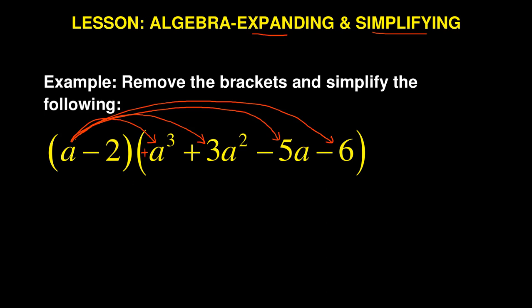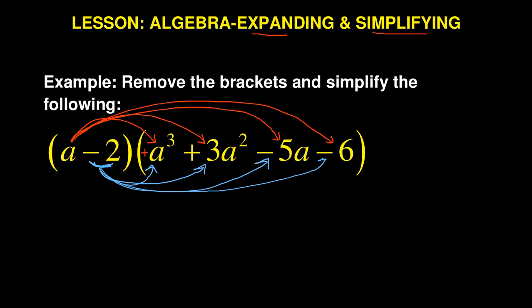The second part of distribution is when not only the 2, but this is considered as minus 2, because the sign before belongs to the number that follows. So the negative 2 will start by multiplying the first number there. Then the negative 2 will also multiply that number with the sign, and the negative will come and multiply also that.